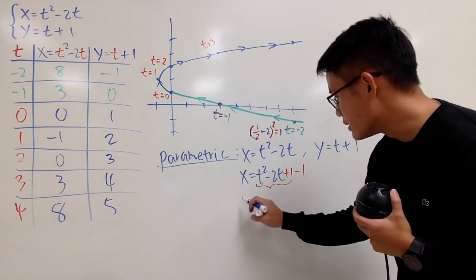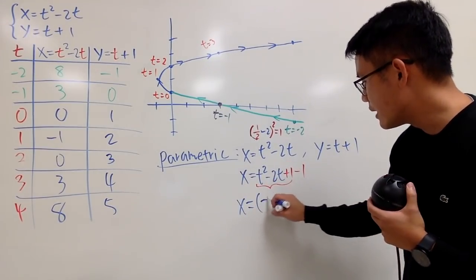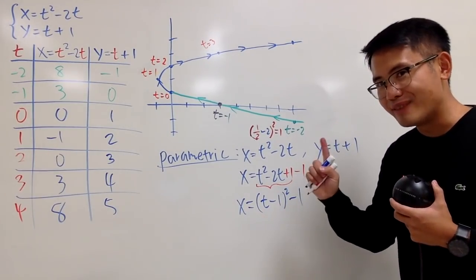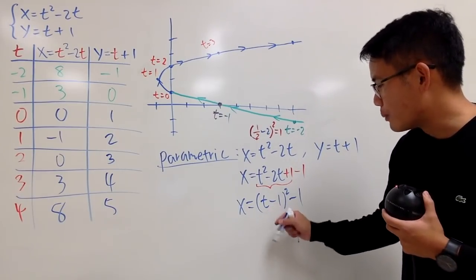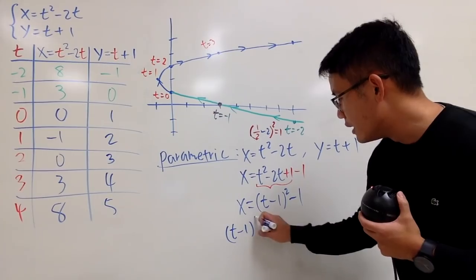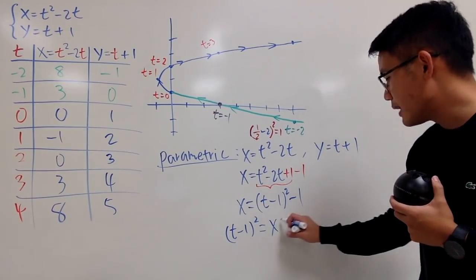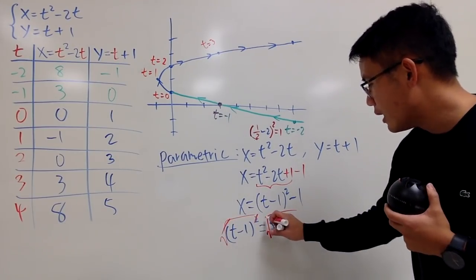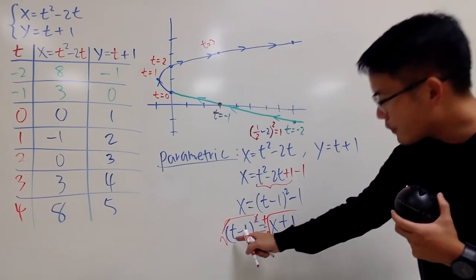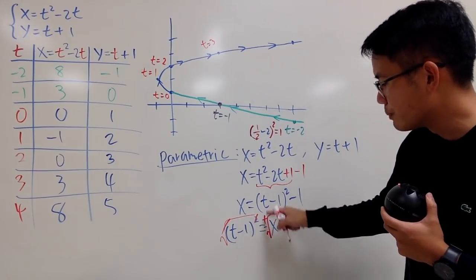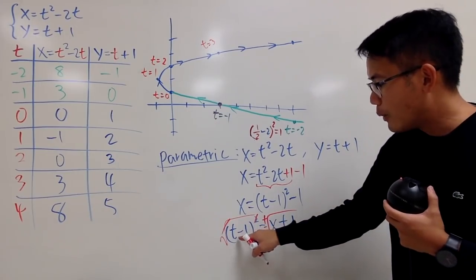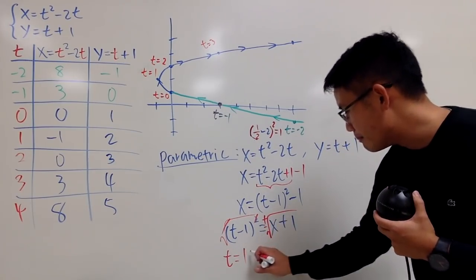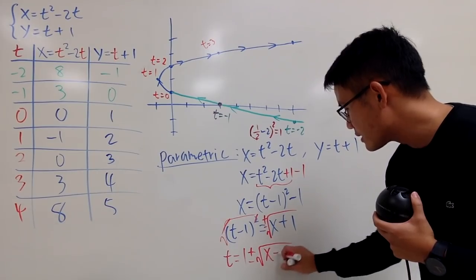Now t appears only once, so we can continue. Add 1 to both sides: t minus 1 squared equals x plus 1. Take the square root of both sides — don't forget the plus or minus — and we get t minus 1 equals plus or minus square root of x plus 1. Adding 1 to both sides: t equals 1 plus or minus square root of x plus 1.